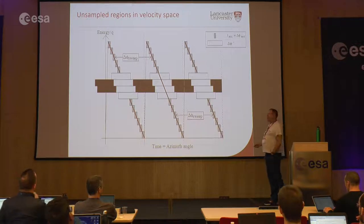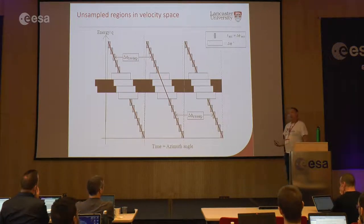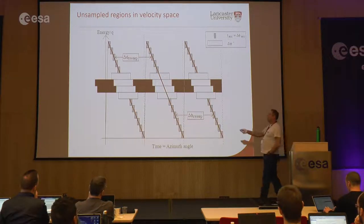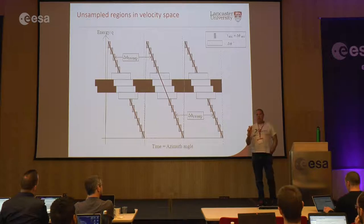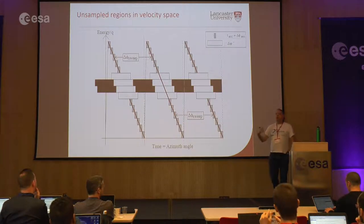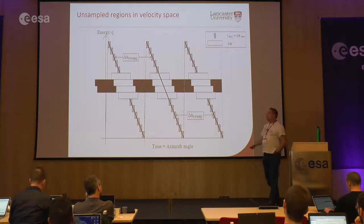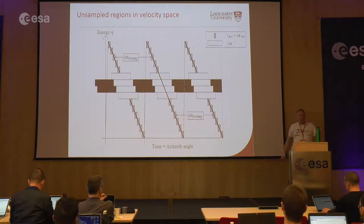The question is: is that missing region important? If you're looking for very fine features in the distribution — maybe non-gyrotropic distributions in the electrons — is it important to capture that? This comes down to how fine the features are and how sharp the gradients are in the velocity distribution you're trying to measure. If you're looking for a sharp discontinuity in the distribution function that might indicate particles are unstable to a particular plasma wave, you might miss it and therefore incorrectly conclude it's not there.